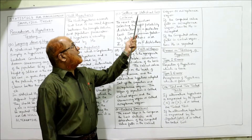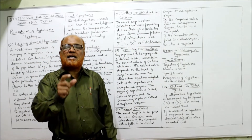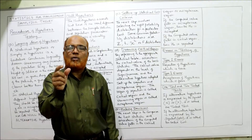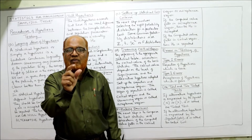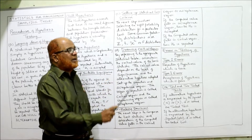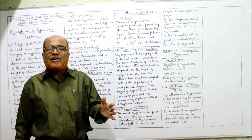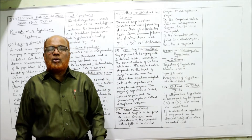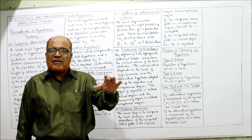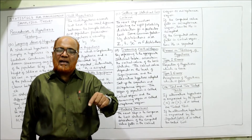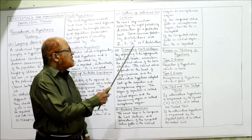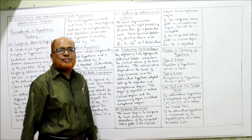The third step is setting up the statistical test criteria. Here we apply the statistical test formula and find out the computed value of the test statistic. We select the right probability distribution for the particular test — we have different tests such as Z test, T test, Chi-square test, and F test. Based on the nature of the data, we apply the appropriate test and compute the value of the test statistic.